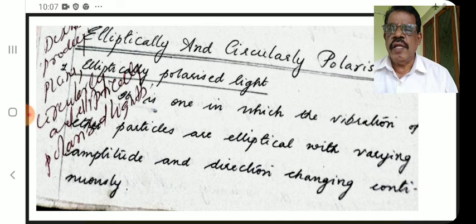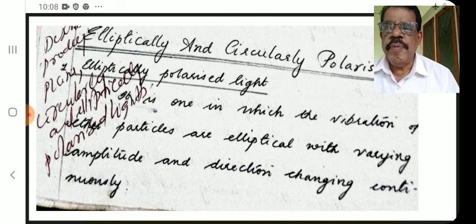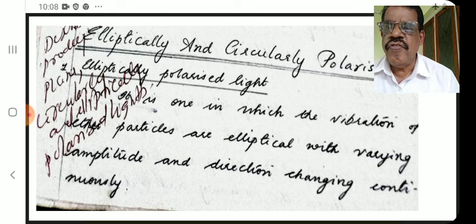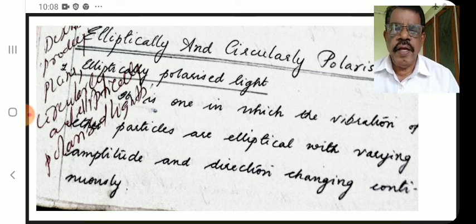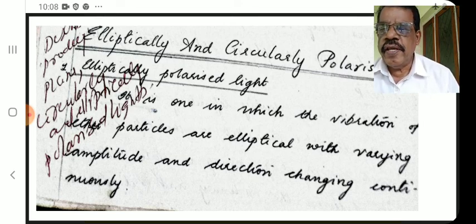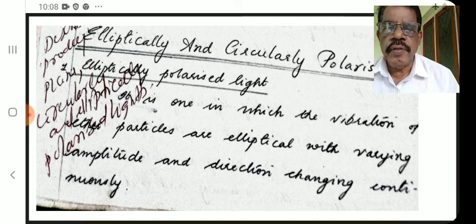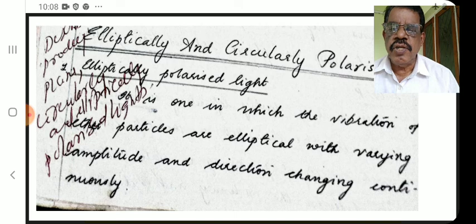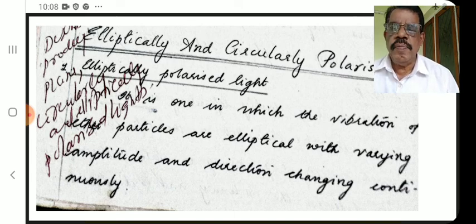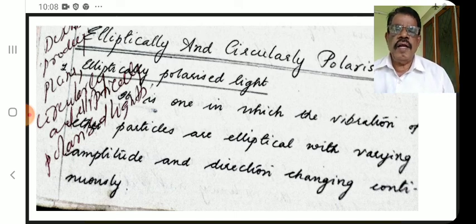Elliptically polarized light is one in which the vibration of ether particles are elliptical — that is the key point — with varying amplitude and direction changing continuously.